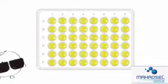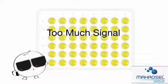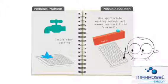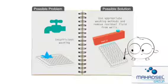Problems with too much signal can be caused by the following. Insufficient washing of the ELISA plate. In this case, please use appropriate washing methods and remove residual fluid from the wells.